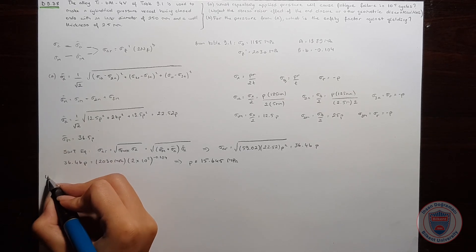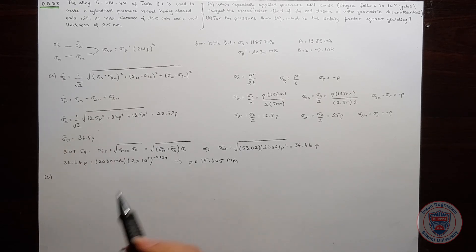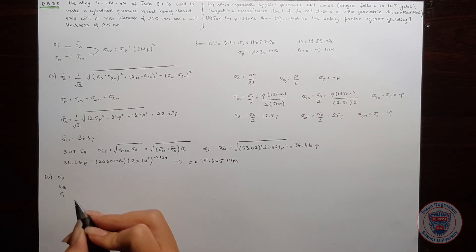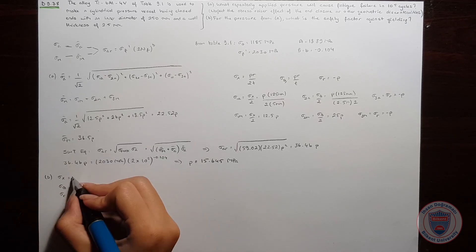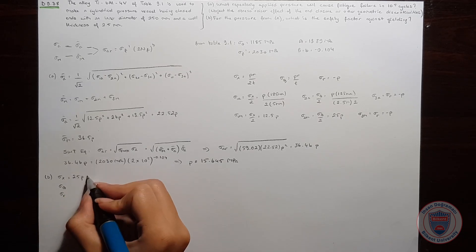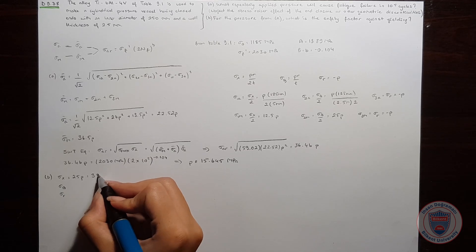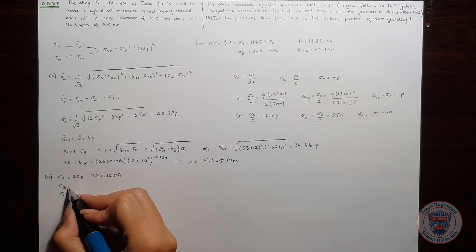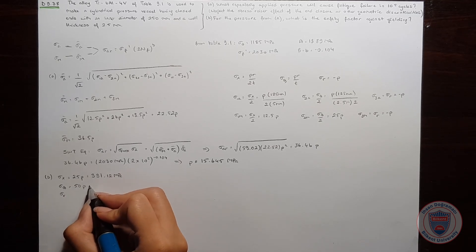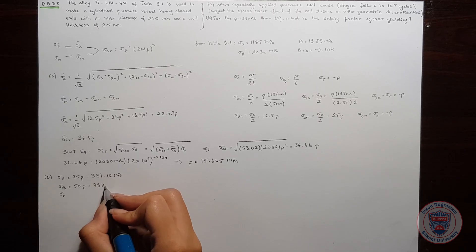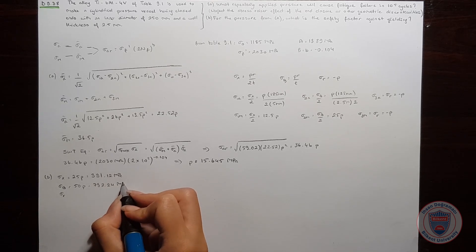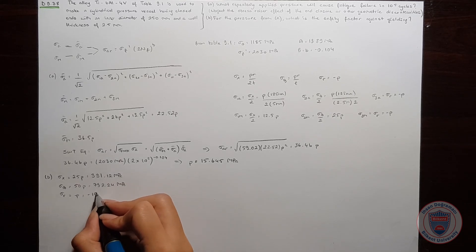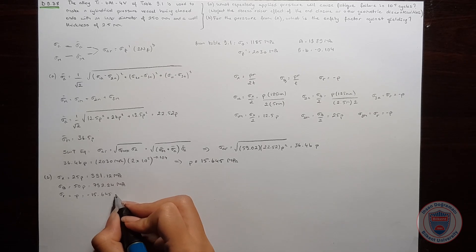Now we can move to part B since we have found the pressure. We can now calculate σx, σθ, and σr. σx was equal to 25P, which is 391.12 MPa. σθ was equal to 50P, which is 782.24 MPa. And σr was minus P, which is minus 15.645 MPa.